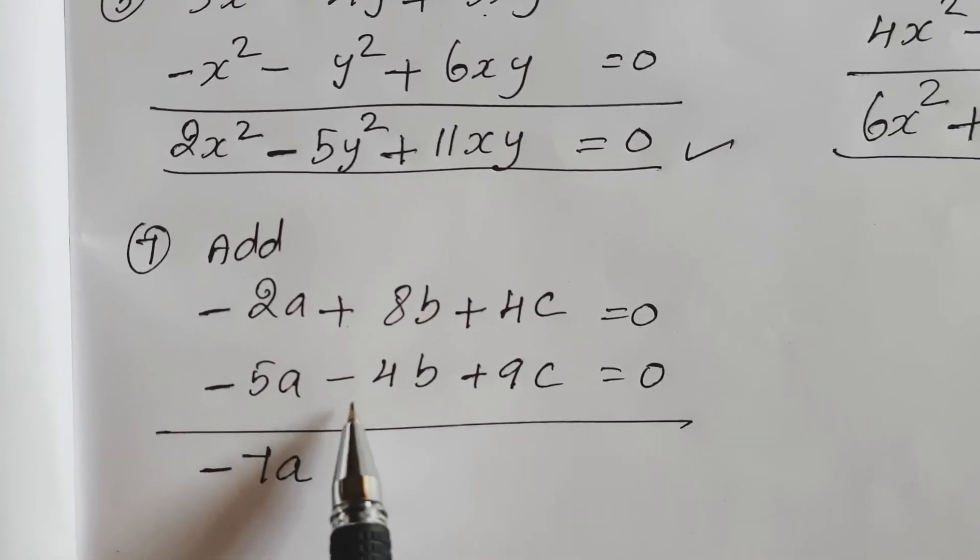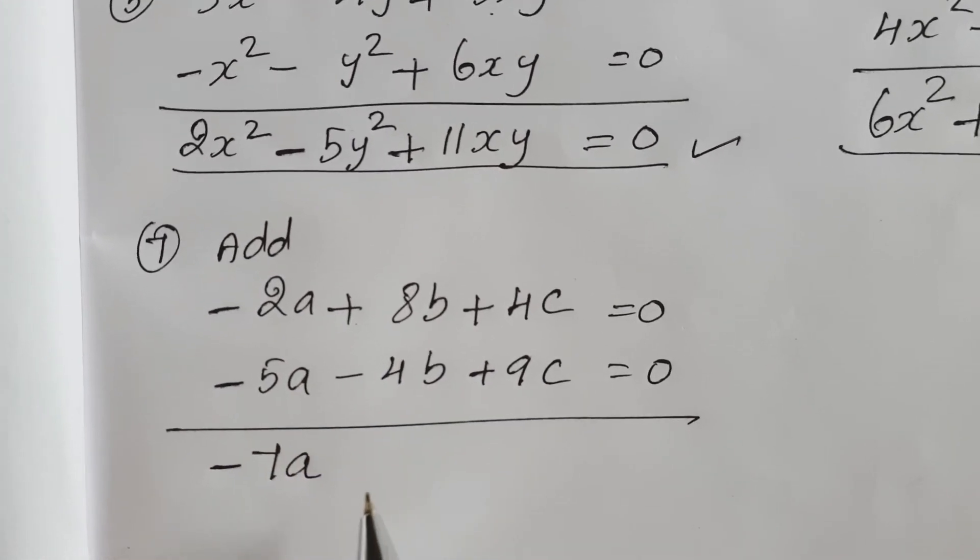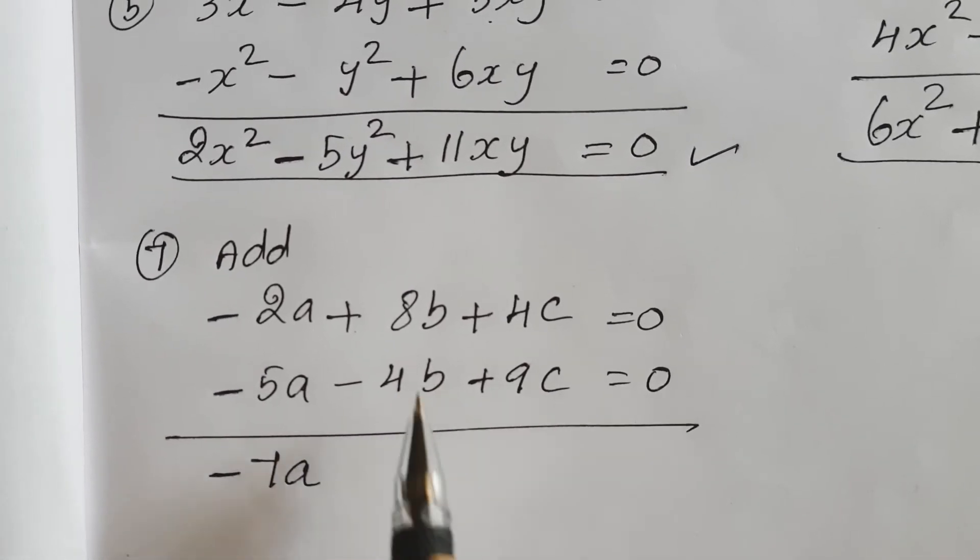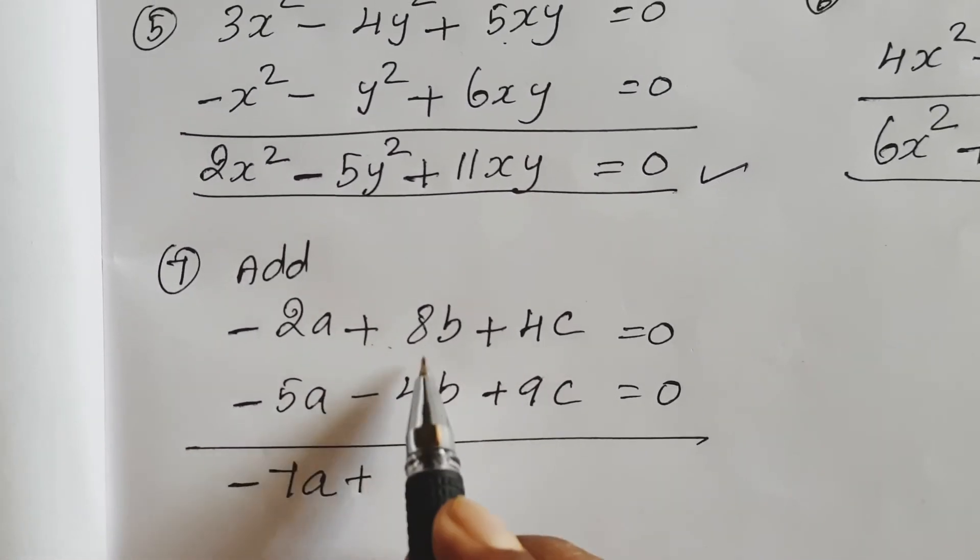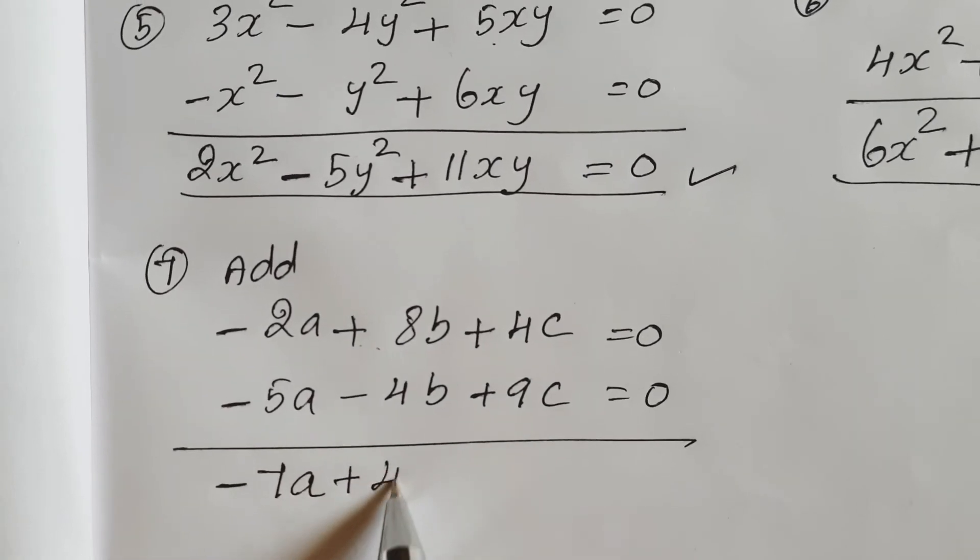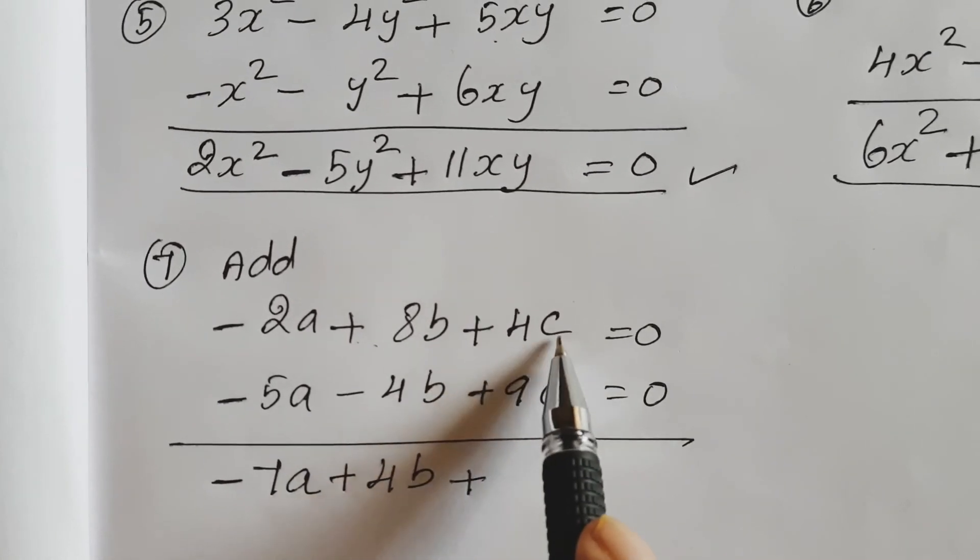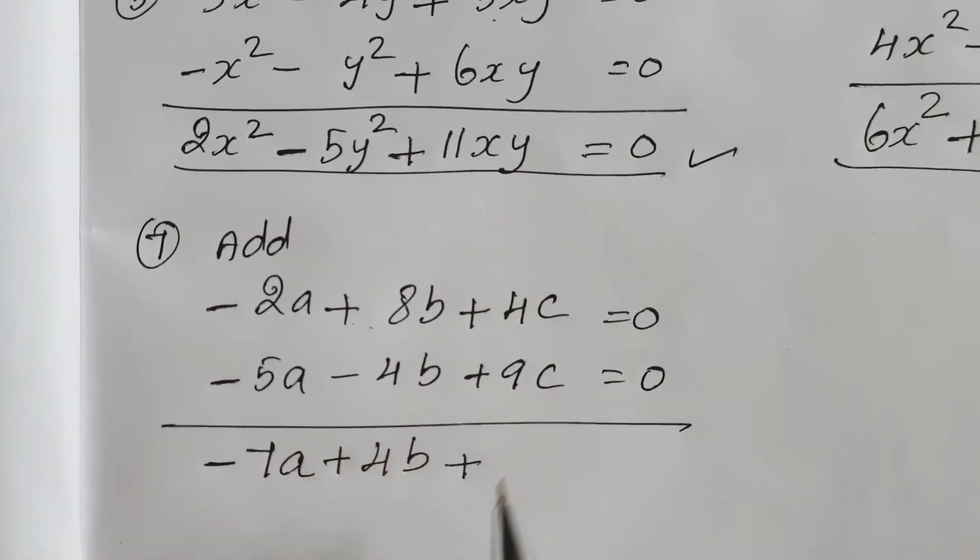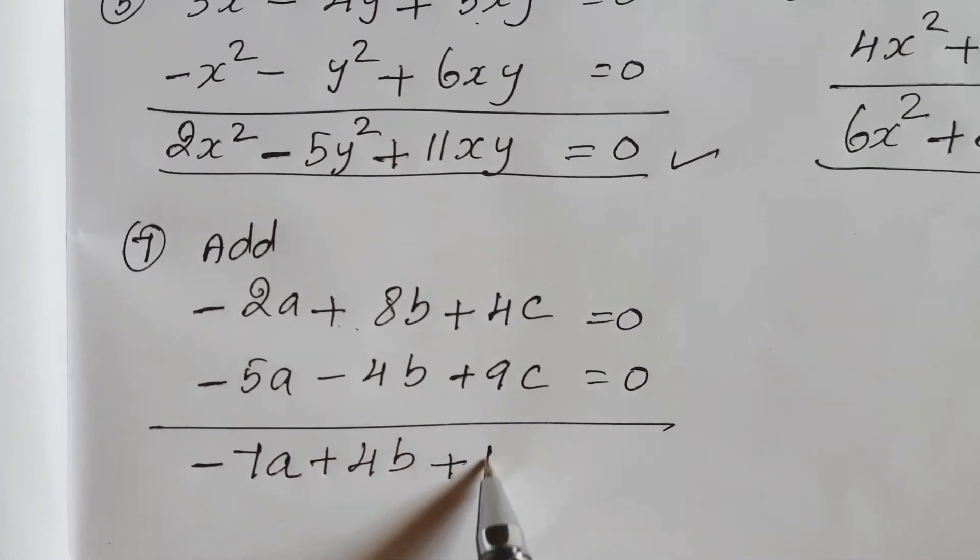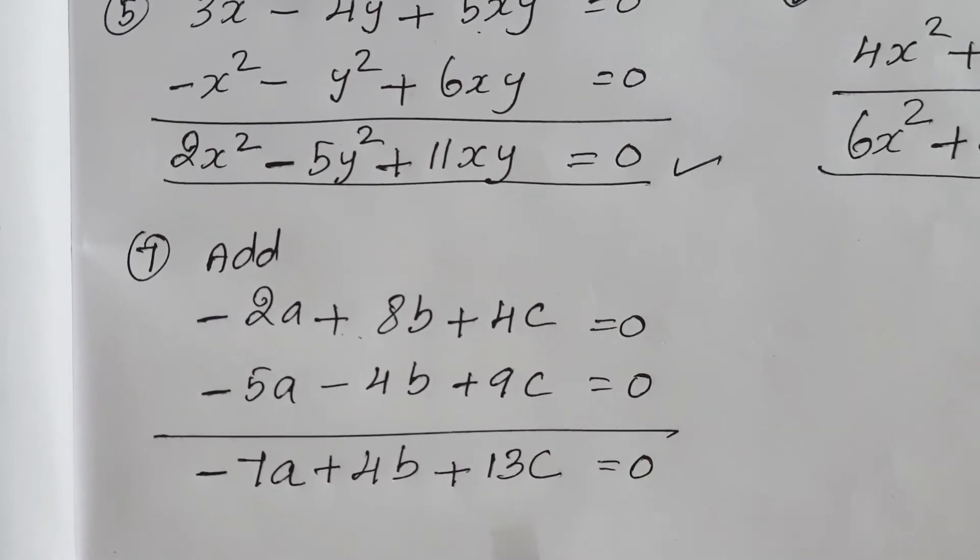Here plus 8b minus 4b, so higher value sign: 8 minus 4, 4b. Plus 4c plus 9c, so 13c equal to 0.